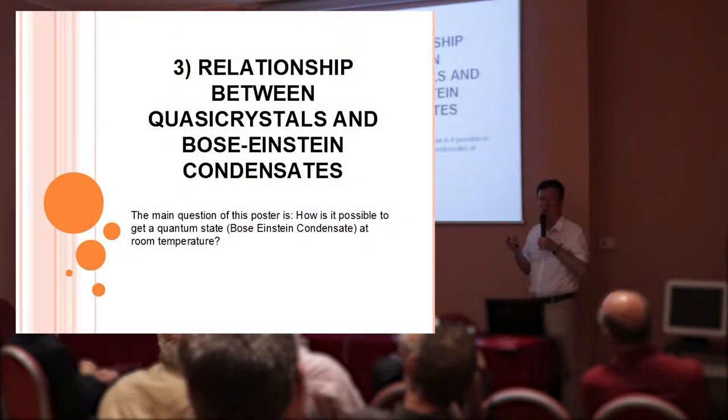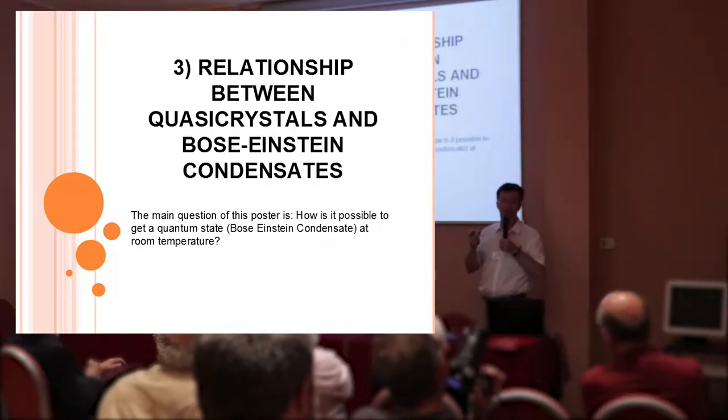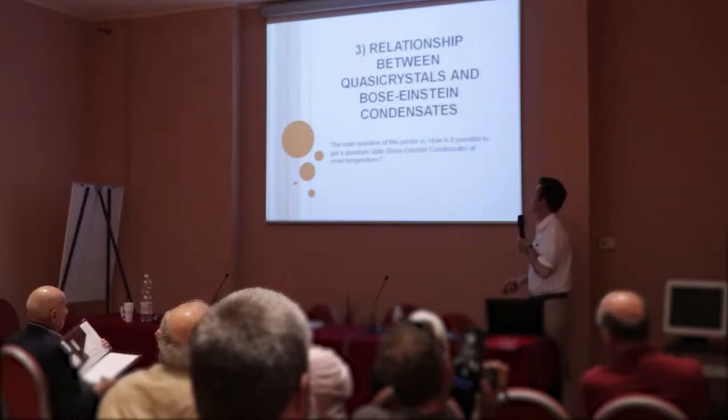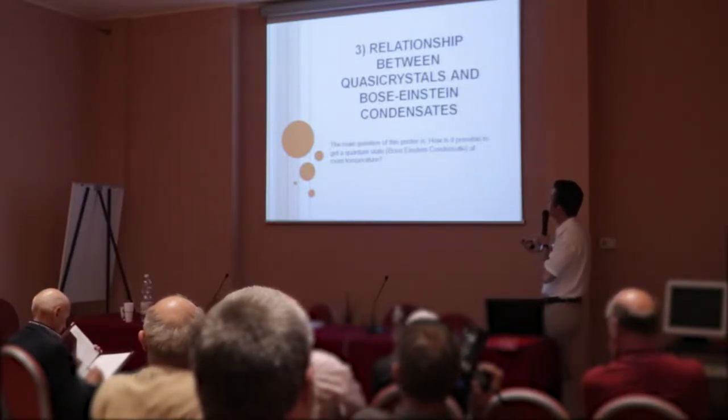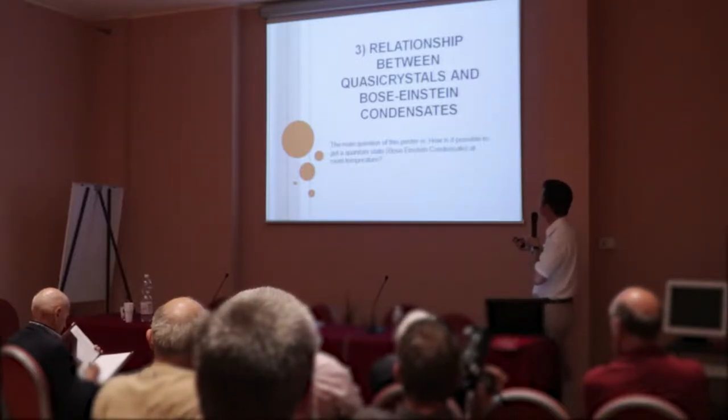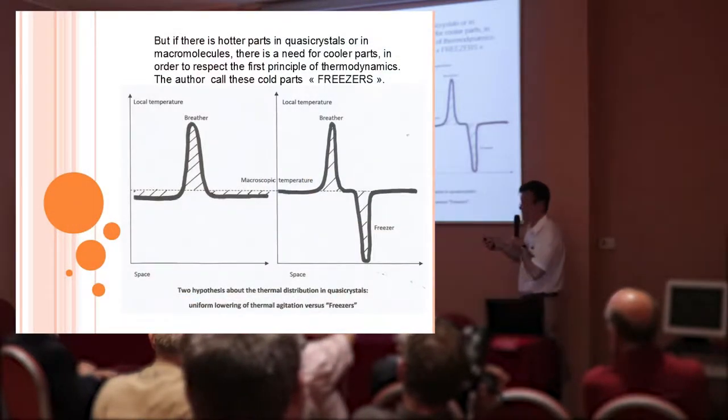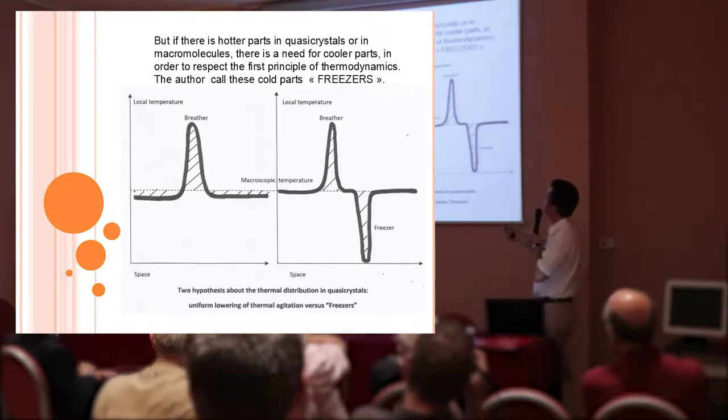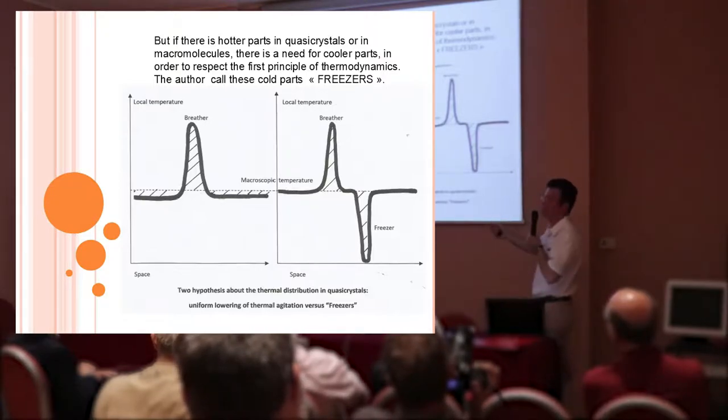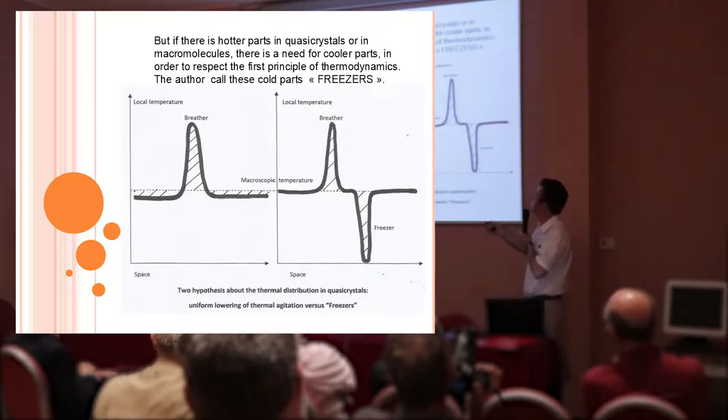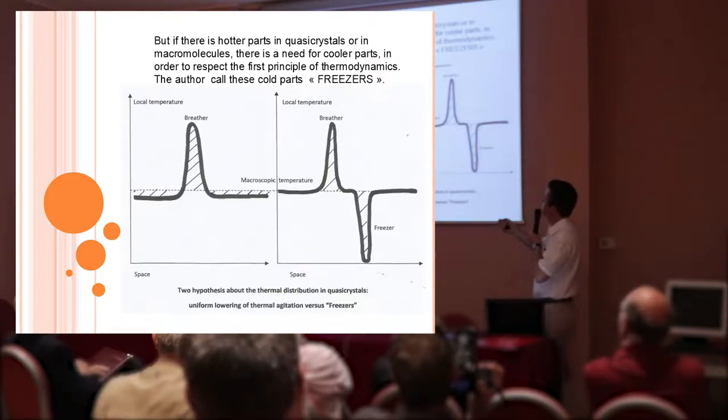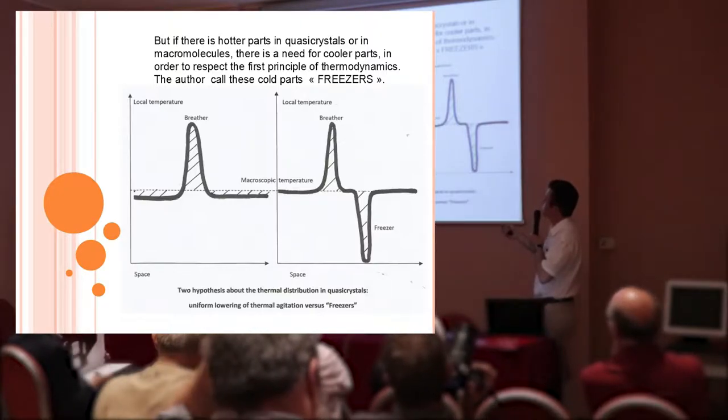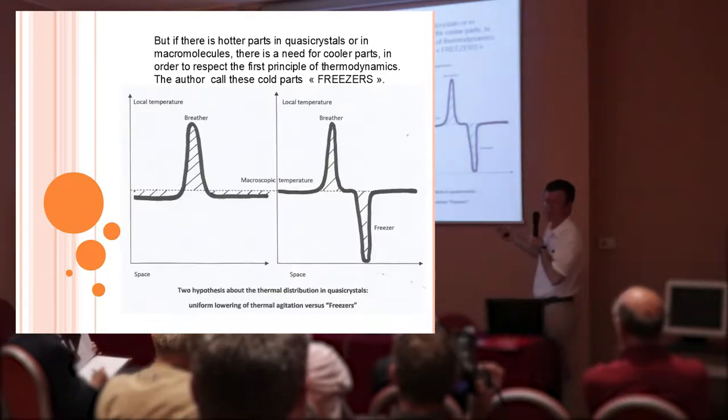So it is a reasonable assumption to think that it is the same thing in the crystal in three dimensions. We need a rule. So what is the relation between quasi-crystalline and Bose-Einstein condensate? The main question is how it is possible to get a quantum state, Bose-Einstein condensate, at room temperature. According to Dr. Dubinko, there is a hot part in some place of the crystal. It is the local temperature, what I call local temperature. It's the thermal vegetation of the atom. Here is the macroscopic temperature. It's the temperature recorded with a thermocouple or a thermometer.